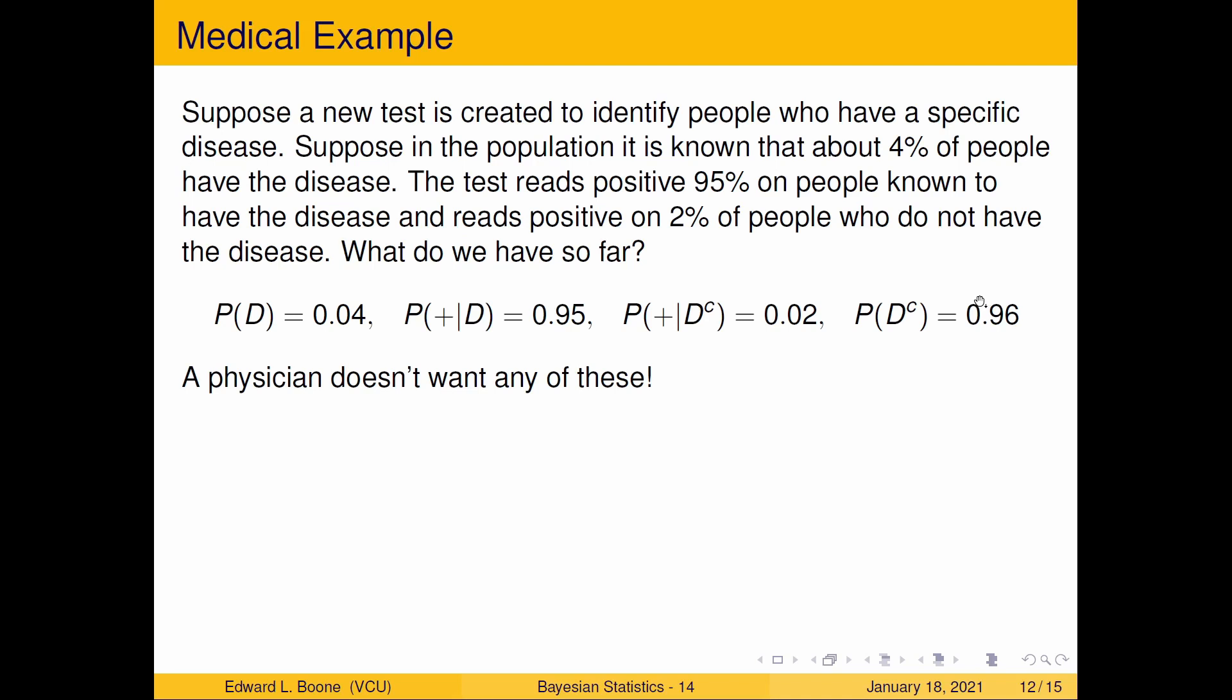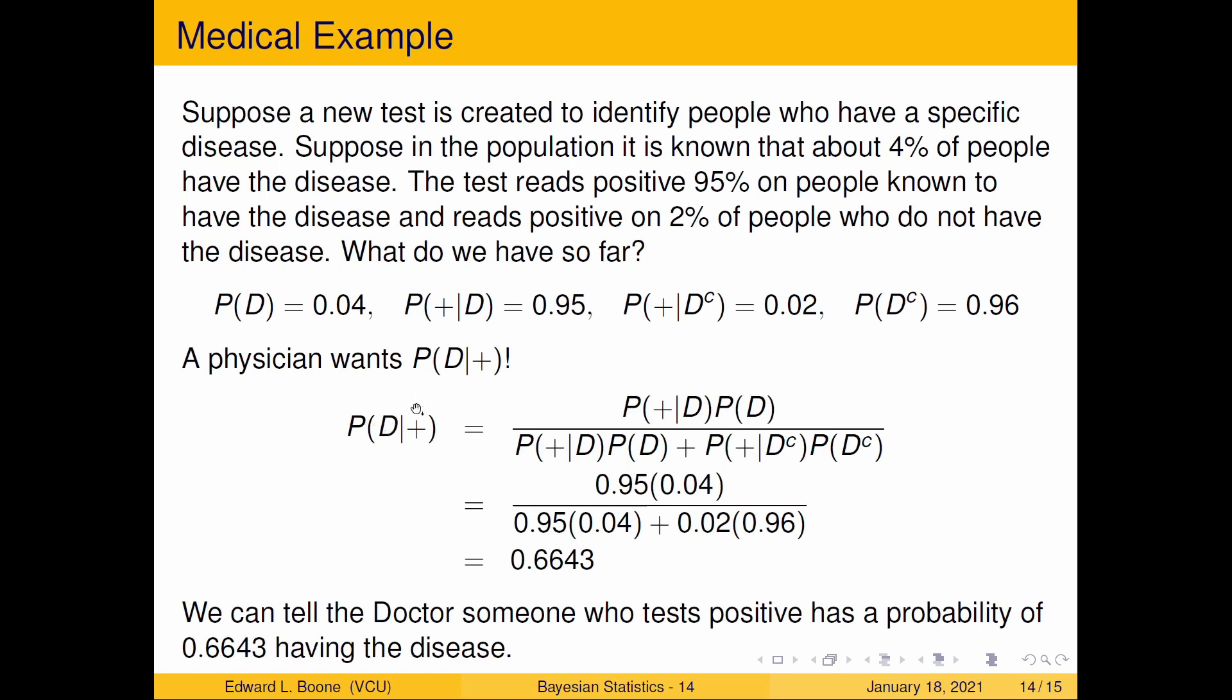If I'm a physician, I don't want any of these. I want the probability that you have the disease given you tested positive. That's really what you're interested in. It's like, oh, no, I've tested positive. Well, what's the probability you have the disease then? Well, this is where Bayes' formula really comes in and helps out. So the probability that you have the disease given positive is the probability that you tested positive given you had the disease times the probability you've had the disease. And you can see down here, the sum here is really easy because there's only two groups. You're either diseased or you're not. So the probability of positive given disease times the probability of disease plus the probability of positive given you're not diseased times the probability of not diseased. Plug in all your numbers here and notice that these two are the same. So that works out nice. And you end up with this number here, 0.6643. So we can tell the doctor someone who tests positive here in this case has a probability of 0.6643 of having the disease.